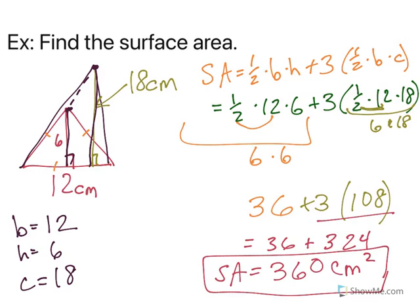The big key is being able to identify what you know from the picture and then appropriately substituting into your equation, and then using the order of operations to simplify. Surface area of an equilateral triangular pyramid.